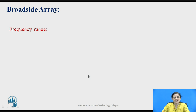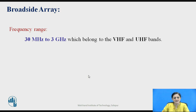What is the frequency range considered for the broadside array antenna? Generally, the frequency range used for the broadside array antenna is from 30 MHz to 3 GHz, which falls in the range between very high frequency (VHF) and ultra high frequency (UHF) bands.